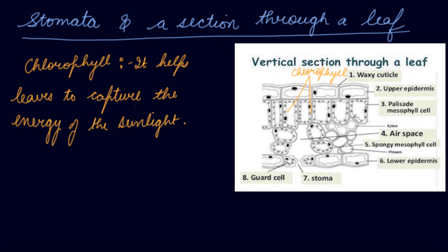This is the vertical section of the leaf, how the leaf looks like. These are waxy cuticles, upper epidermis, palisade cells. Then here is the air space through which air can come and go. Now here are the spongy cells, lower epidermis, then stomata and guard cells. We have studied how stomata looks like in the previous slide. So this is how the leaf is structured.